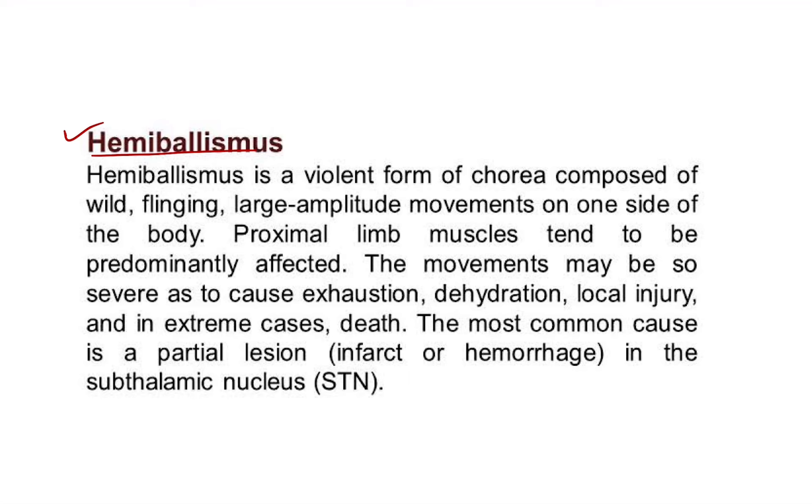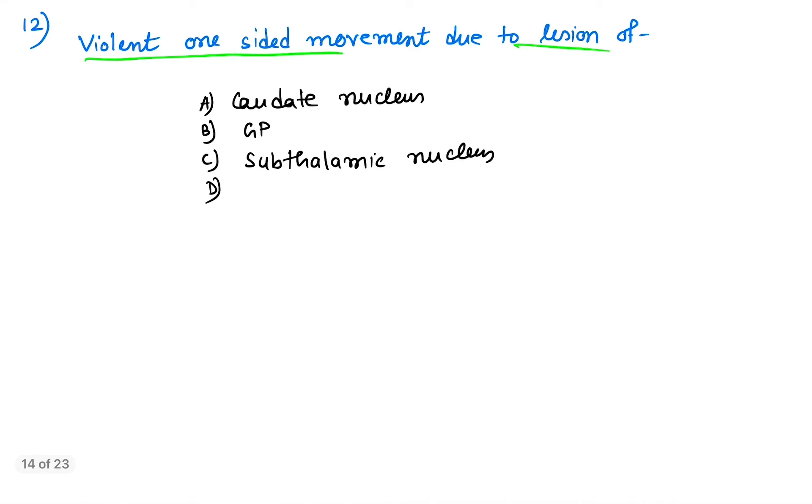Hemiballismus is a violent form of chorea composed of wild, flinging, large amplitude movements on one side of the body. It occurs due to damage of the subthalamic nucleus (STN), so the answer is subthalamic nucleus.